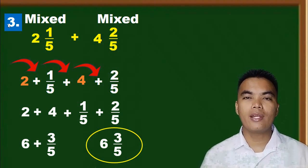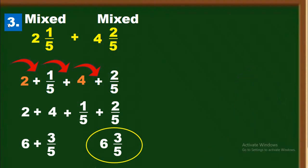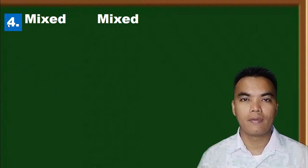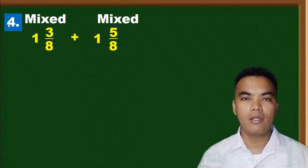We can also use the vertical form of adding. We add two and one over five plus four and two over five vertically, which also equals six and three over five. Let's look at another example.